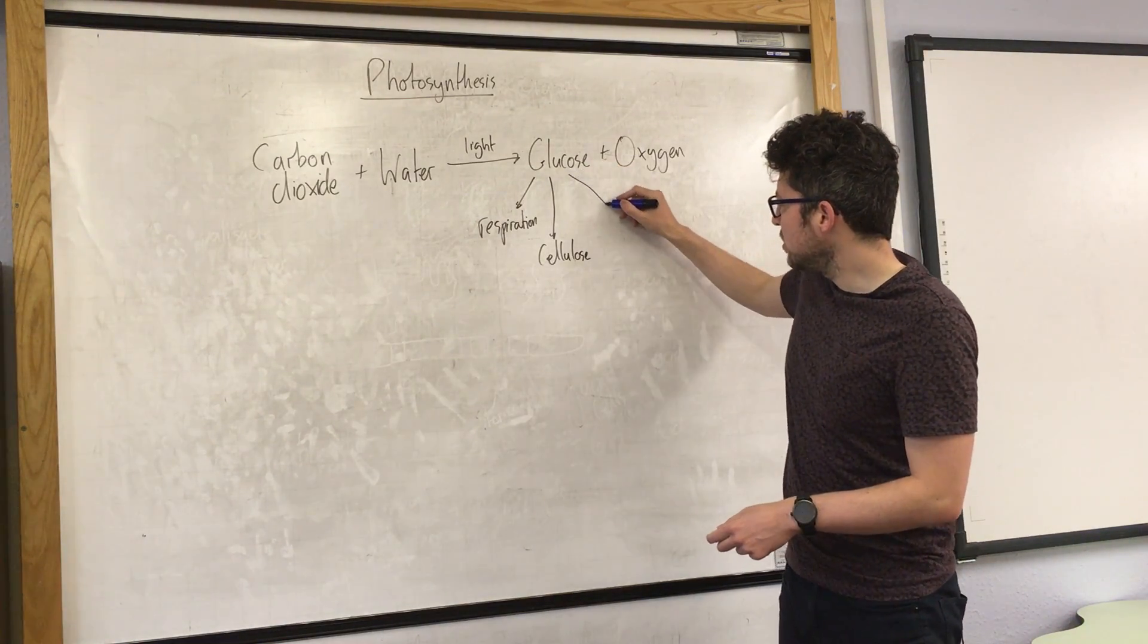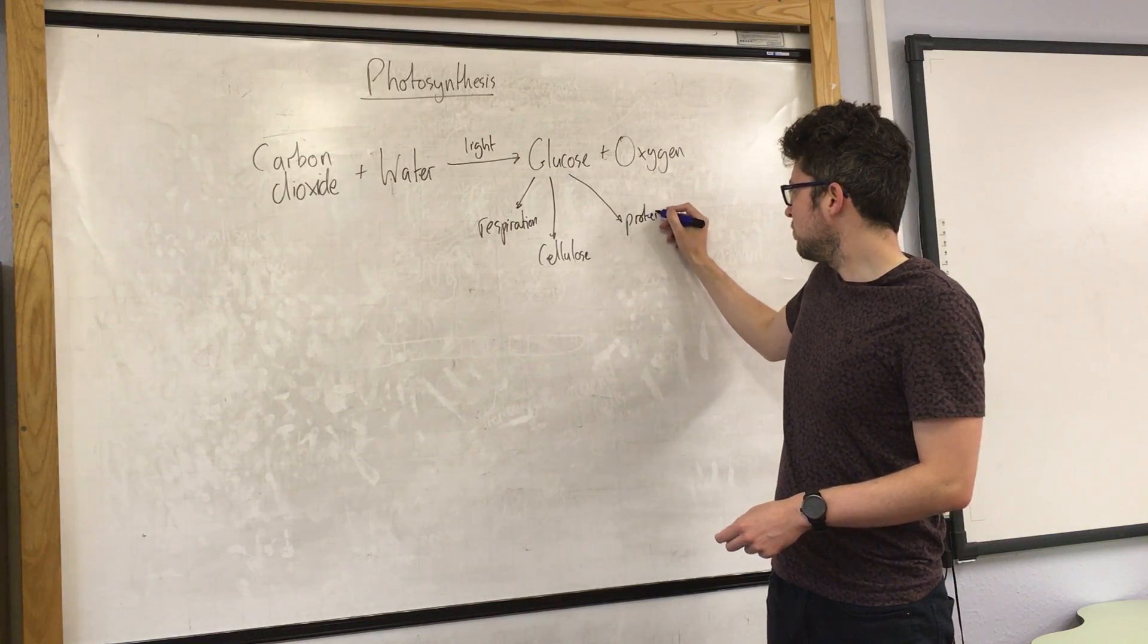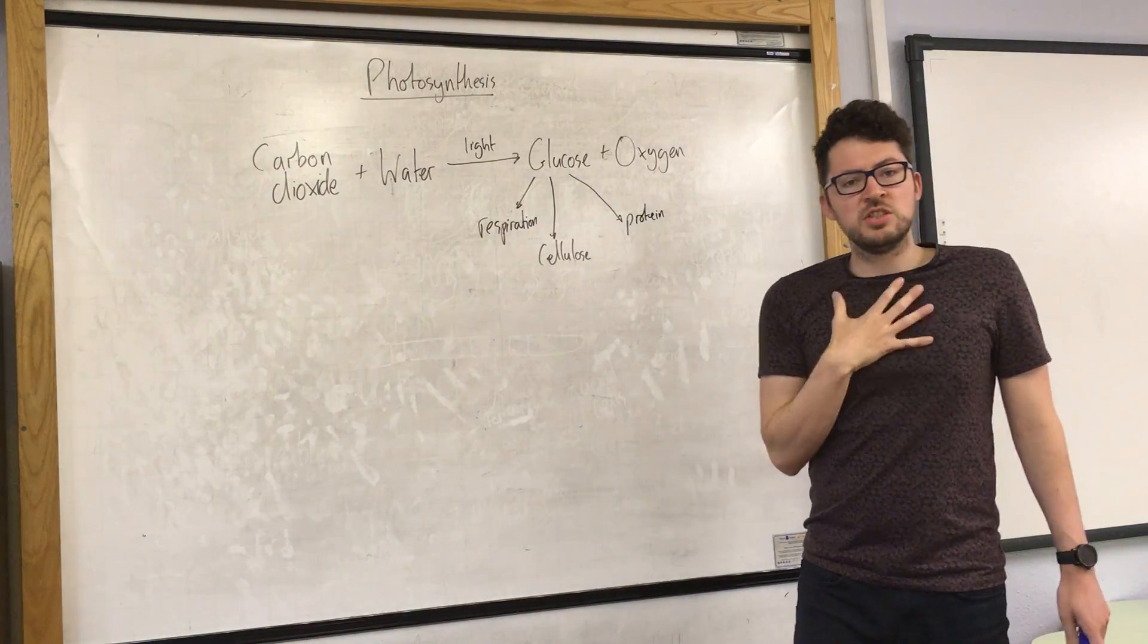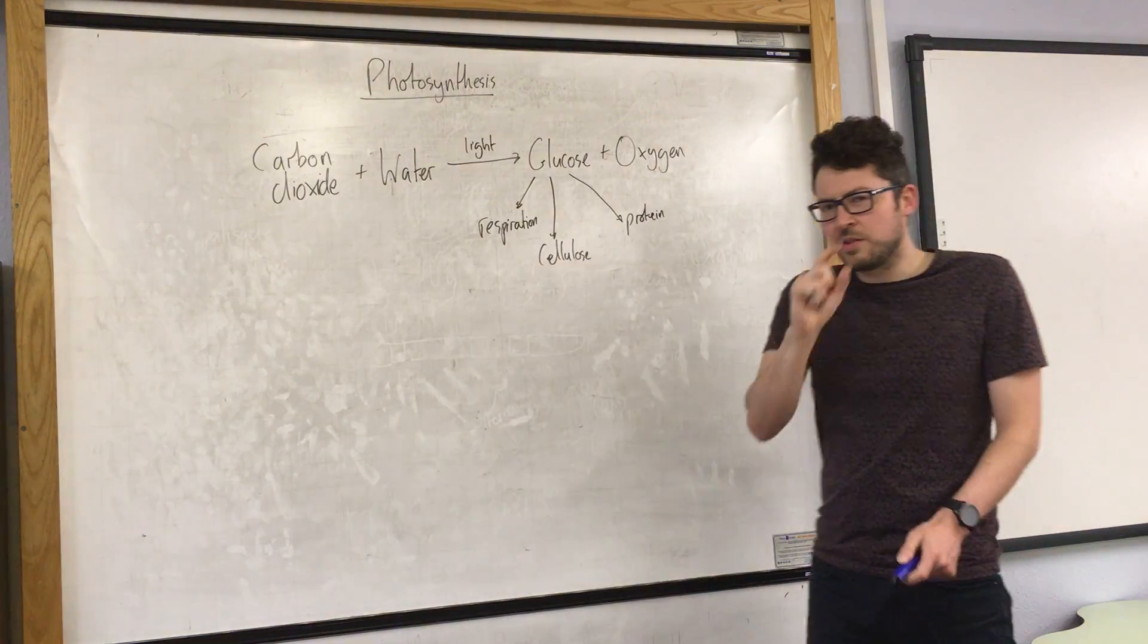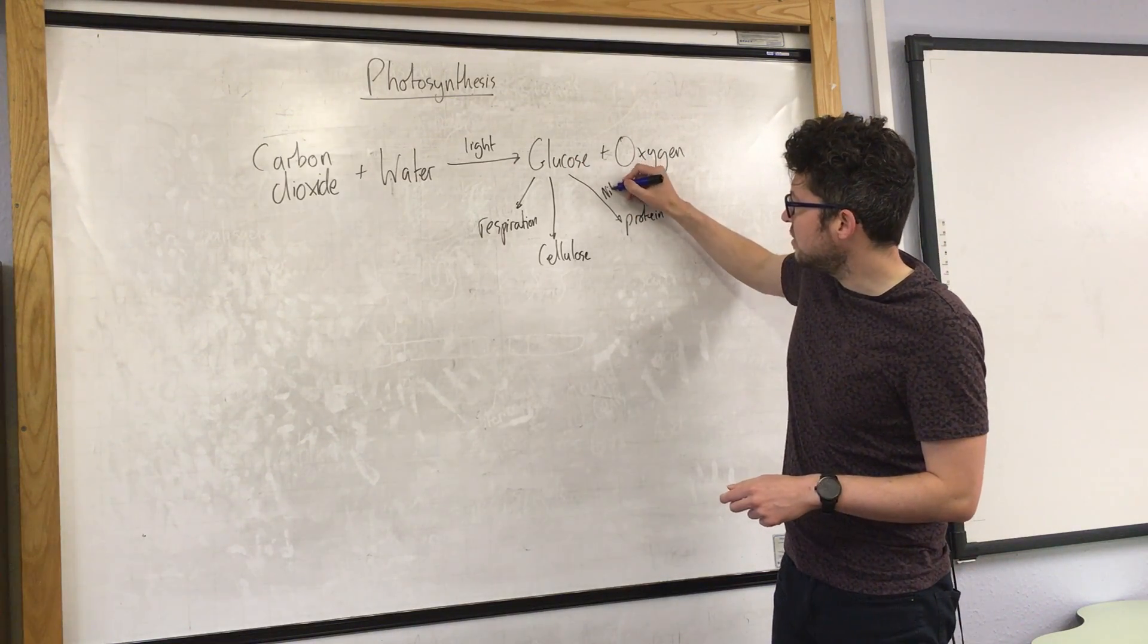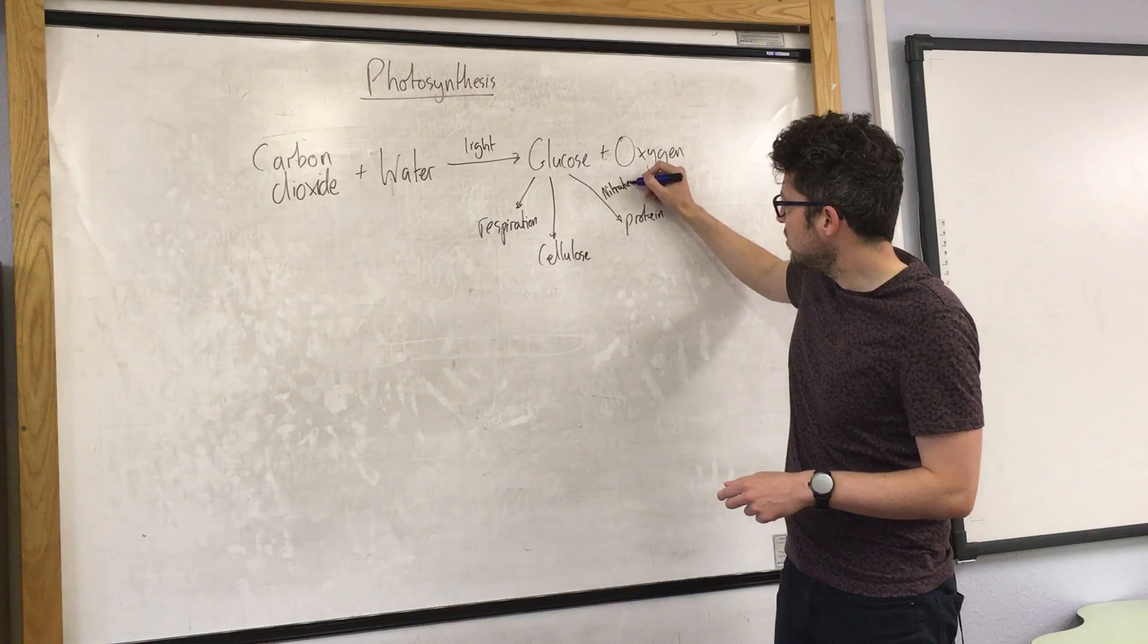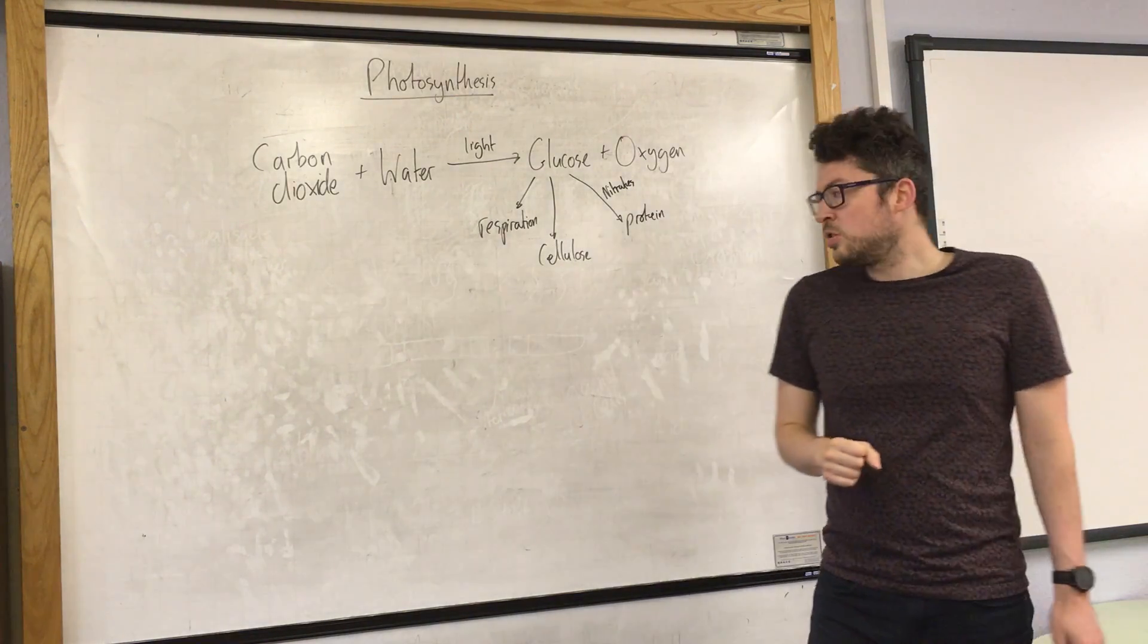They also use glucose to make protein. Plants use protein for the same reason we do - for growth and repair. But they need one other thing; they can't make it from glucose alone. They also need nitrates, which are nitrogen-containing compounds they get from the soil.